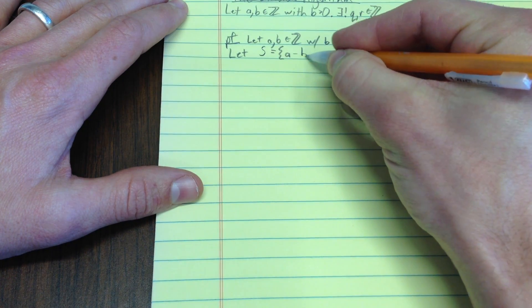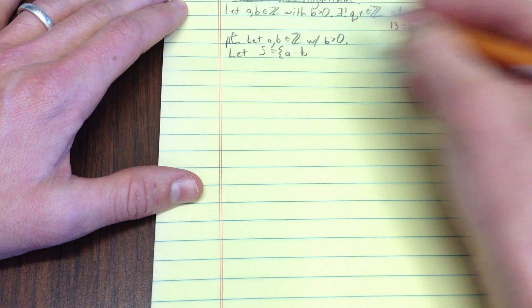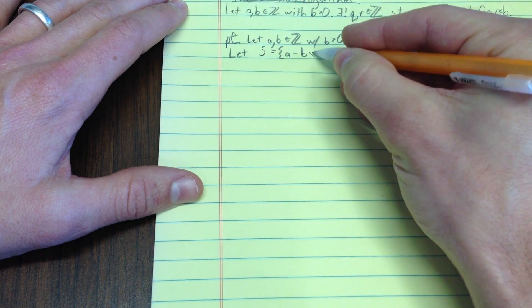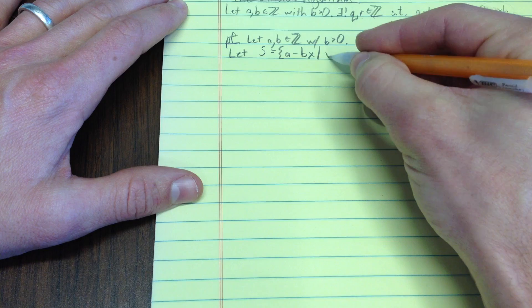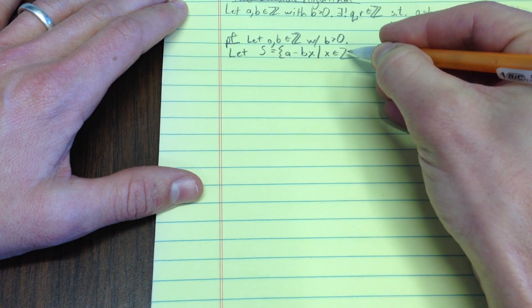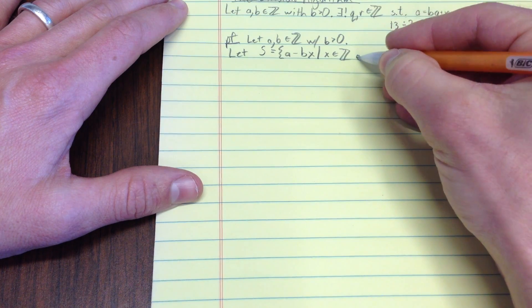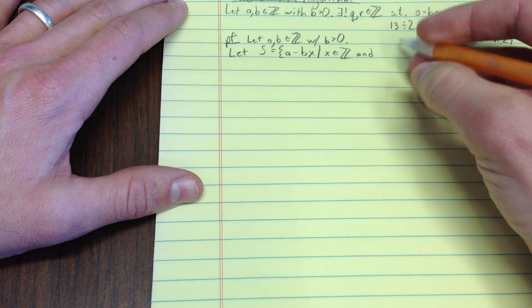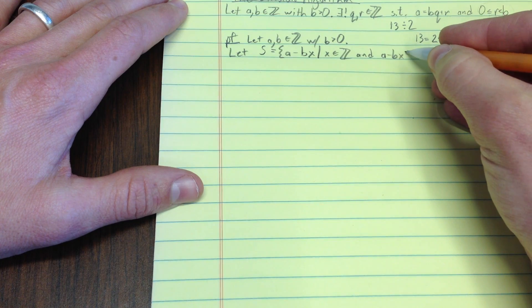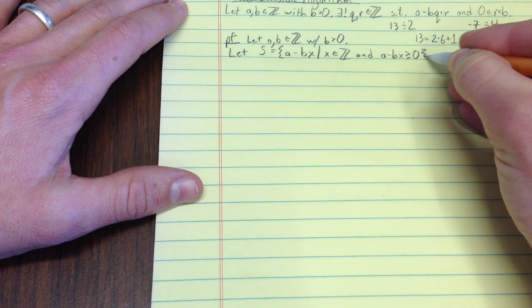You'd subtract b times some other number. Well, q is unique, so let me just put x in there such that x is an integer. And let's also require that a minus bx is greater than or equal to 0.